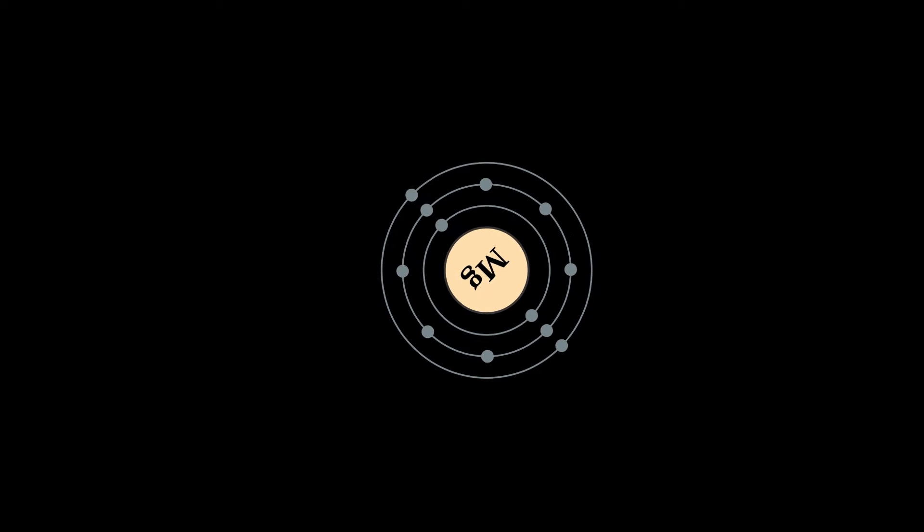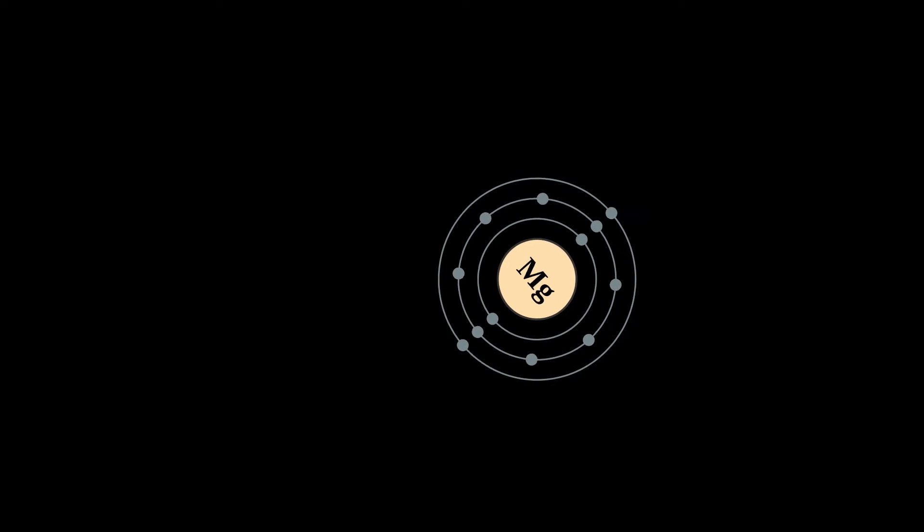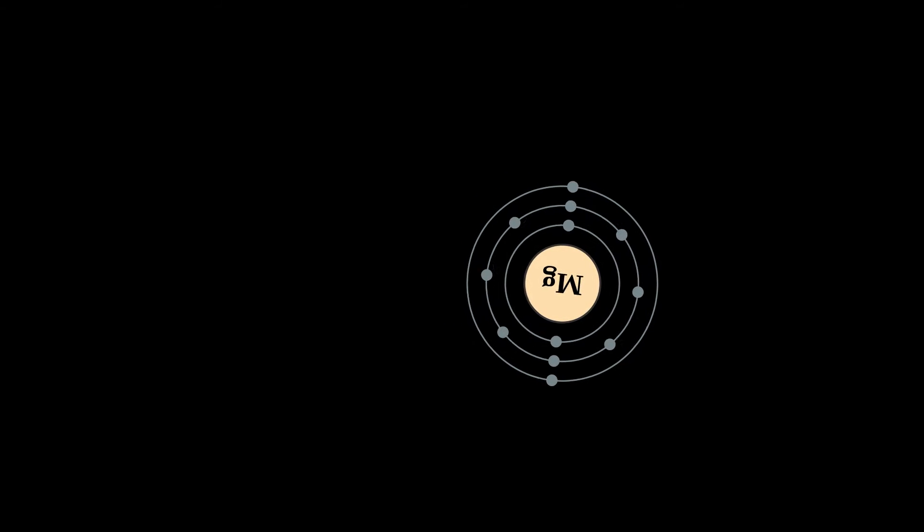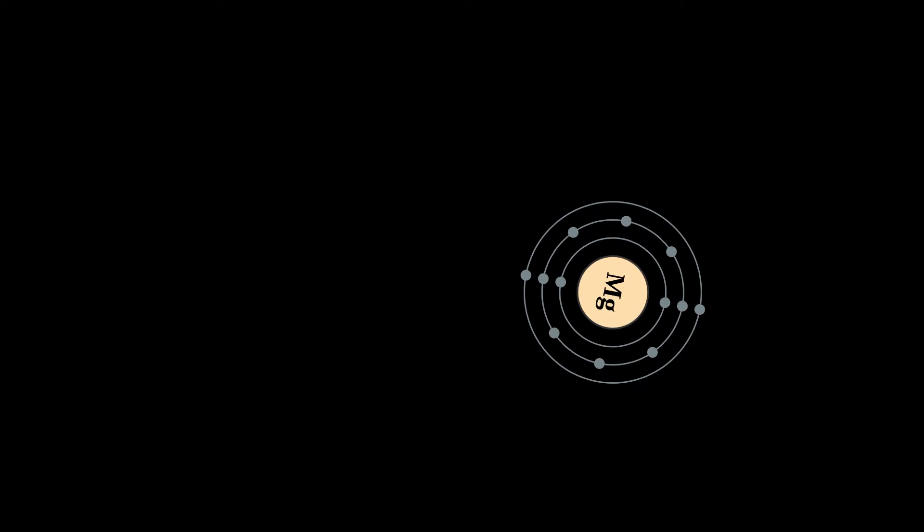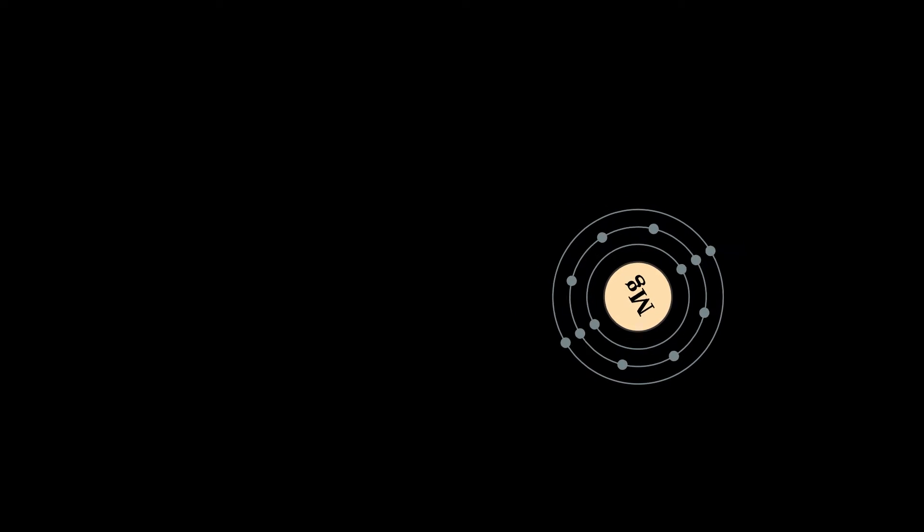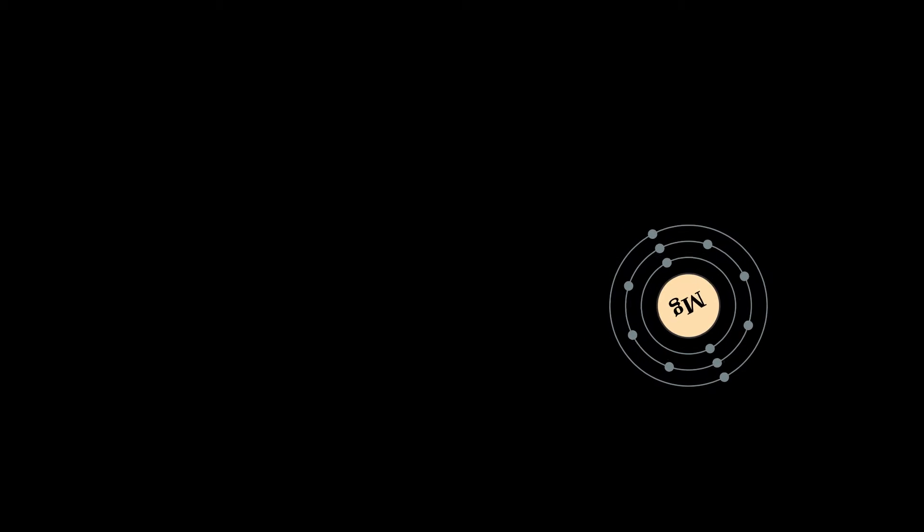Magnesium is a chemical element with symbol Mg and atomic number 12. It is a shiny gray solid which bears a close physical resemblance to the other five elements in the second column, group 2 or alkaline earth metals, of the periodic table. All group 2 elements have the same electron configuration in the outer electron shell and a similar crystal structure.